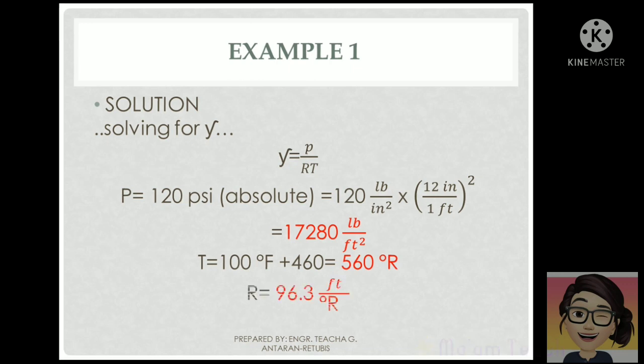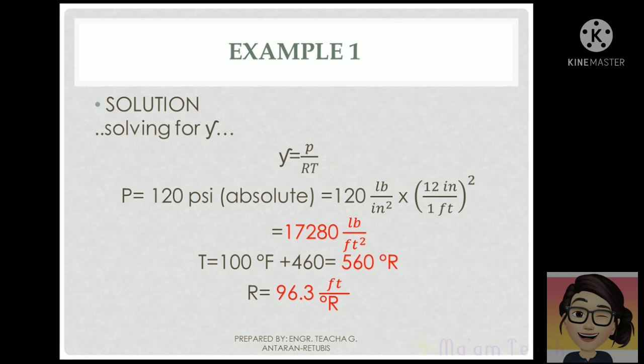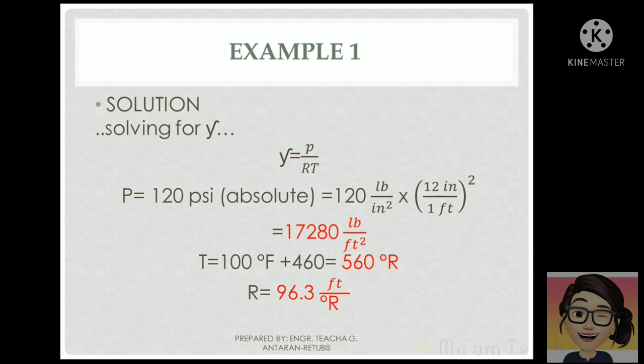For the value of our gas constant, this depends on our system of units. If it is SI, it will have a different value. If it is British Engineering, it will have a different value. This 96.3 is used in British engineering. Take note: feet per degree Rankine. These will be the values we will use in our formula.